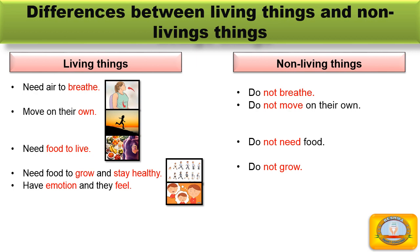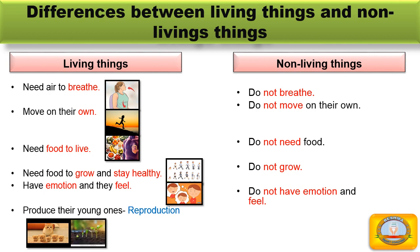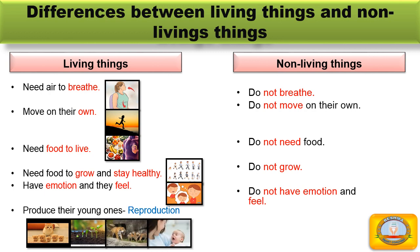Next difference: all living things produce their young ones, and this is called reproduction. Cats have kittens, plants grow from saplings, birds hatch from eggs, tigers have cubs, and human beings have babies. Non-living things do not reproduce. Do you think your water bottle can produce a smaller water bottle? No, because your water bottle is a non-living thing.